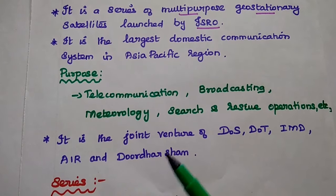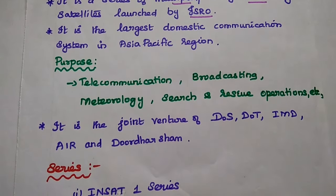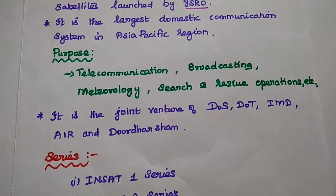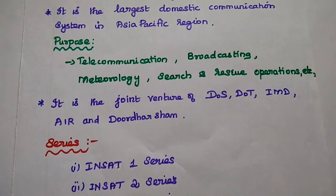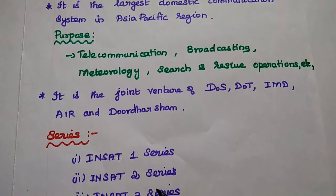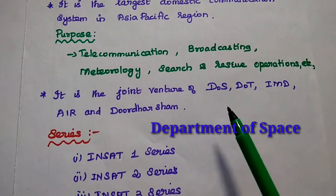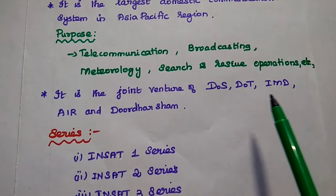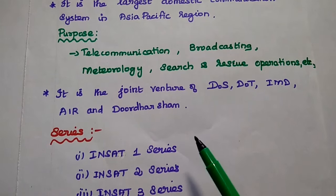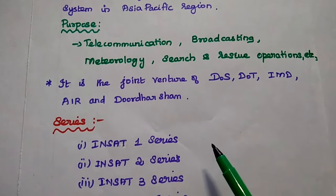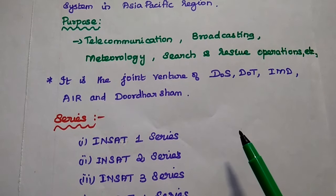INSAT is mainly used for telecommunication, broadcasting, meteorology, and search and rescue operations. It is a joint venture of DOS, DOT, IMD, AIR, and Doordarshan. DOS means Department of Space, DOT means Department of Telecommunication, IMD means Indian Meteorology Department, and AIR means All India Radio.